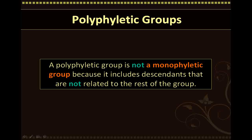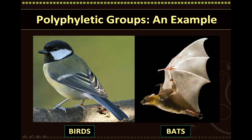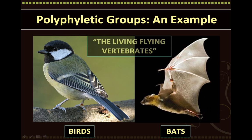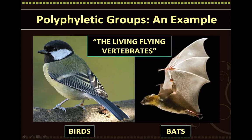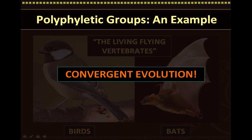Polyphyletic groups are not monophyletic because they include descendants that are not related, or those that are only distantly related to the rest of the group. A real-life example of a polyphyletic group would include birds and bats, which are often classified together as the living, flying vertebrates. Due to similar environmental pressures, both birds and bats have solved the problem of harnessing aerodynamics in the same way by evolving wings. However, wings have evolved in both birds and bats separately — they have not been inherited from a common ancestor. So here we see a case of convergent evolution.